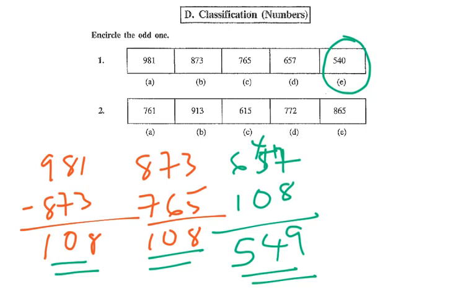Also, we could look at the place values. If we look here, the ones column is 1. That's 3. That's 5. That's 7. And this one is 0. What do we notice here? 1, 3, 5, 7. All numbers that end with 1, 3, 5, 7 are odd numbers. All numbers that end with a 0 are even numbers. So again, this is the odd one. Now guys, complete the second one on your own.